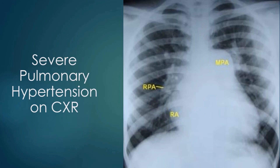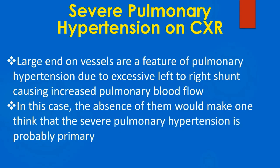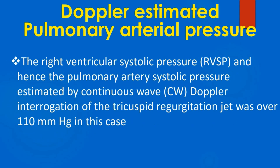The end-on views of blood vessels seen through the RPA shadow are tiny, indicating that RPA dilatation is unlikely to be due to increased pulmonary blood flow. Large end-on vessels are a feature of pulmonary hypertension due to excessive left-to-right shunt causing increased pulmonary blood flow. In this case, the absence of them would suggest that the severe pulmonary hypertension is probably primary pulmonary hypertension. The right ventricular systolic pressure, and hence pulmonary artery systolic pressure, estimated by continuous wave Doppler integration of the tricuspid regurgitation jet, was over 110 mmHg in this case.